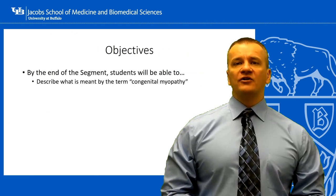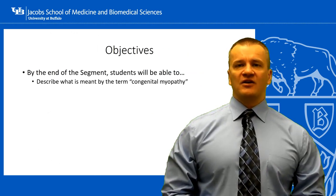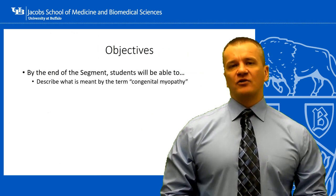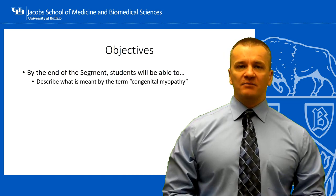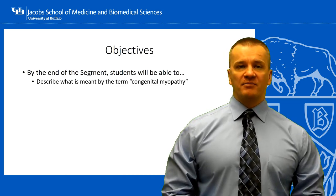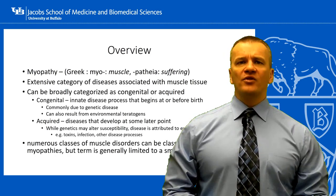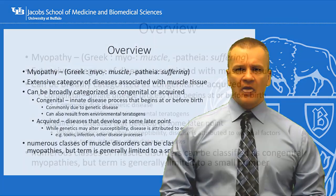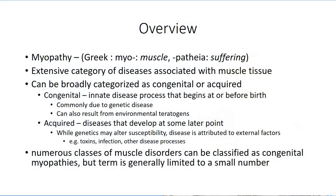In this first session, we'll clear up some misconceptions based on the name and describe precisely what we mean by the term congenital myopathy. Let's start with a breakdown of the term itself. Myopathy is a term that you have already heard in relation to metabolic myopathies and will hear again with additional groups of disorders. The term itself means muscle suffering and is applied to a varied number of disease groups related to muscle tissue.